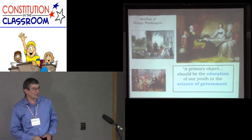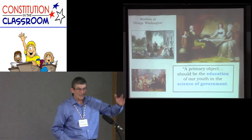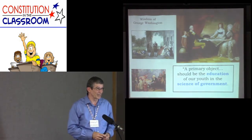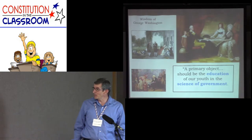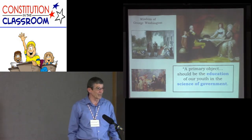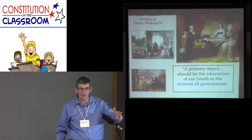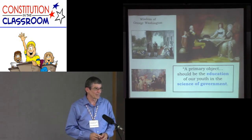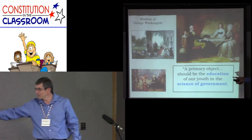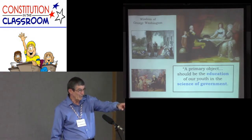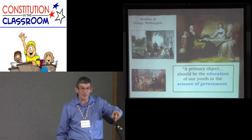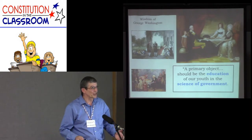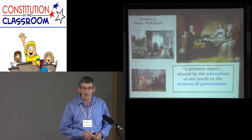We come to George Washington. A primary object should be the education of our youth in the science of government. How does that statement alone fit with the Old Testament verse: train up a child in the way they should go, and when they are old, they will not depart from it. How important is it to train our youth early in their lives to their future benefit?